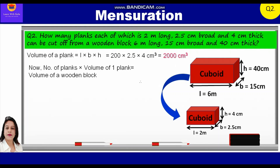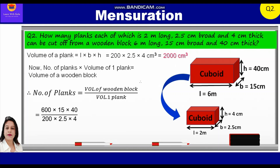Therefore, number of planks is equal to volume of wooden block upon volume of one plank. Substituting the values: 600 into 15 into 40 upon 200 into 2.5 into 4, which is equal to 180 planks. Therefore, number of planks is equal to 180.